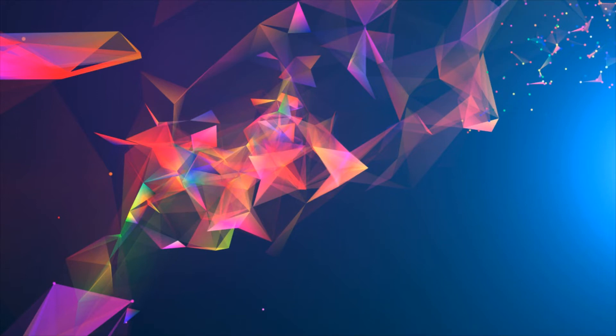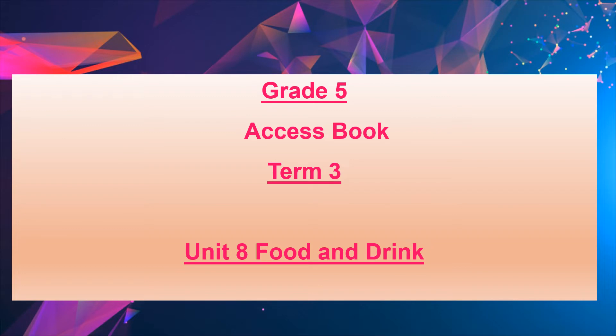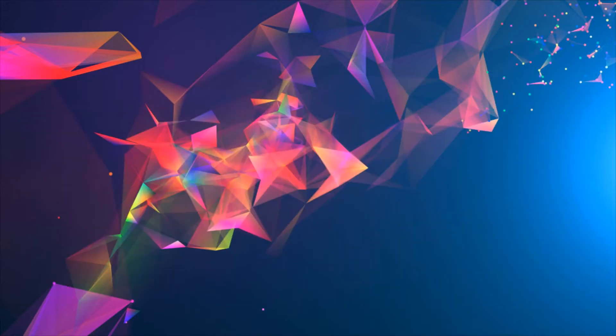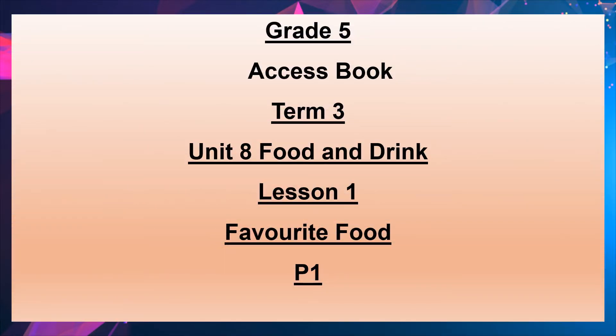Hi everyone. Today we are going to start our lessons in Access Book 5, Unit 8. It's about food and drink. We'll start with lesson one — lesson one: favorite food, page one.